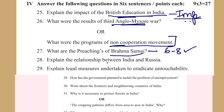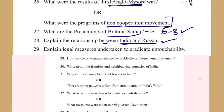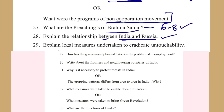Explain the relationship between India and Russia. India and Russia, India and America — one of these is fixed. Then explain the legal measures undertaken to eradicate untouchability. You have Article 17 of the Constitution which prohibits untouchability, and then the Untouchability Prohibition Act.